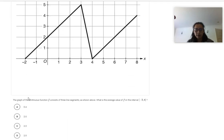So I've copied the question over here. It says the graph of the continuous function f consists of three line segments as shown above. So this is f. So what is the average value of f on the interval from negative two to eight? And as you guys know, the average value would be given by integral over interval.